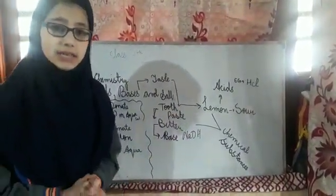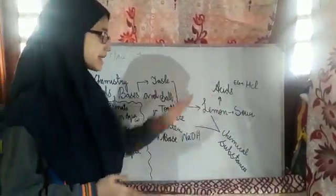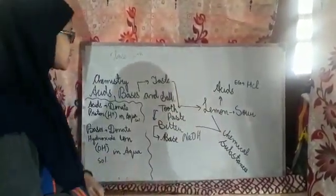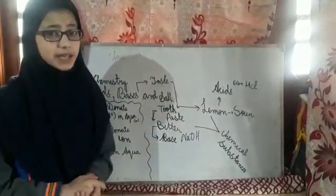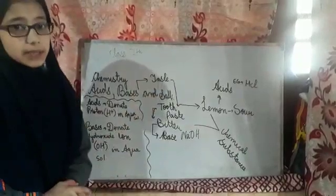Chemical substances are present in lemons which makes them sour and those chemical substances are called acid. While the chemical substances in toothpaste which make them bitter are termed as base. Now talking about the acids and bases,